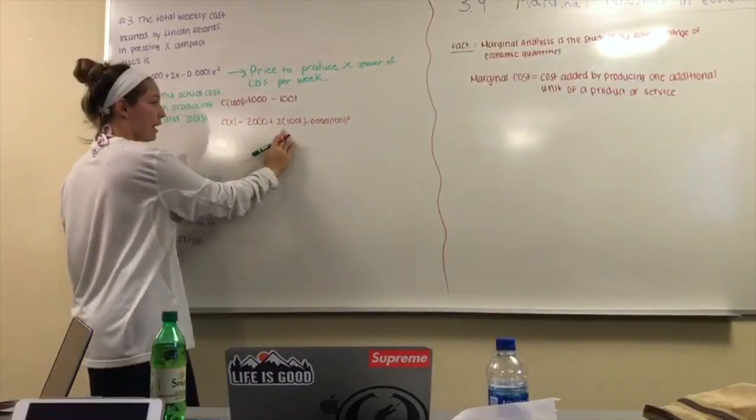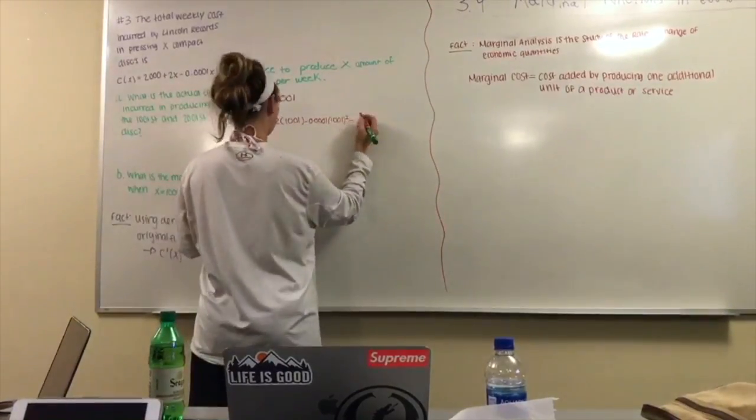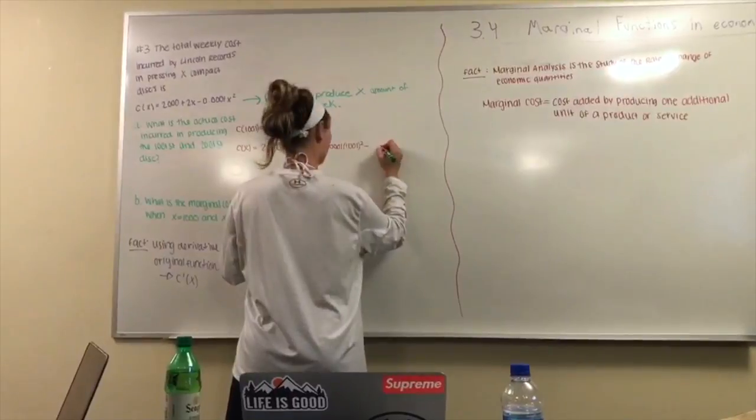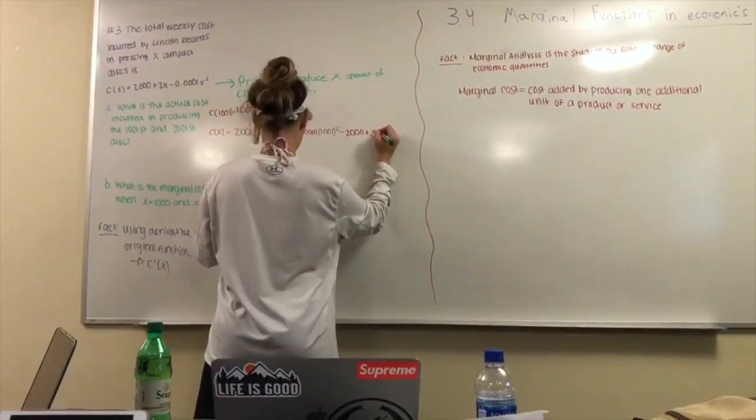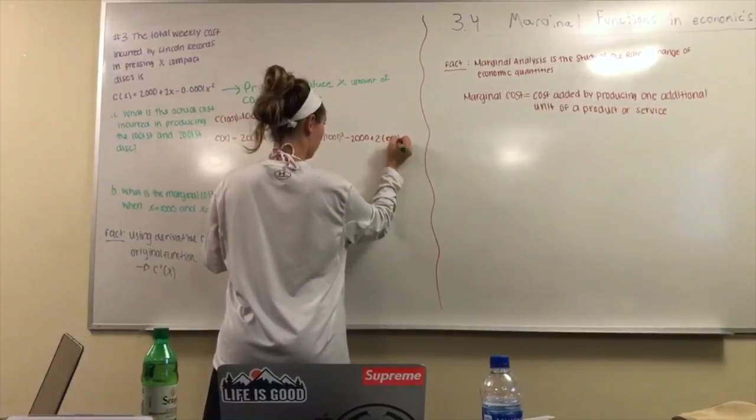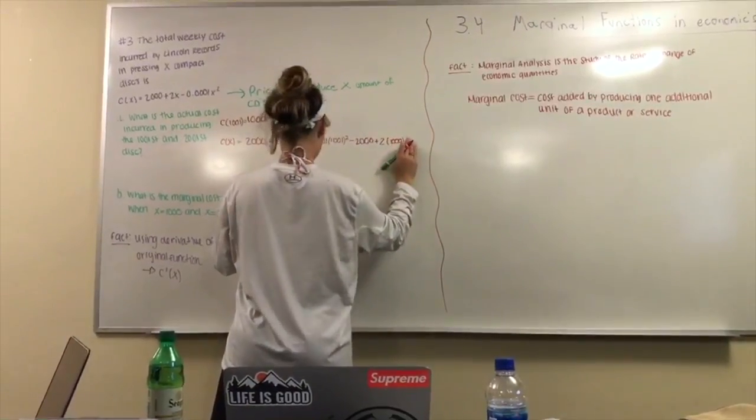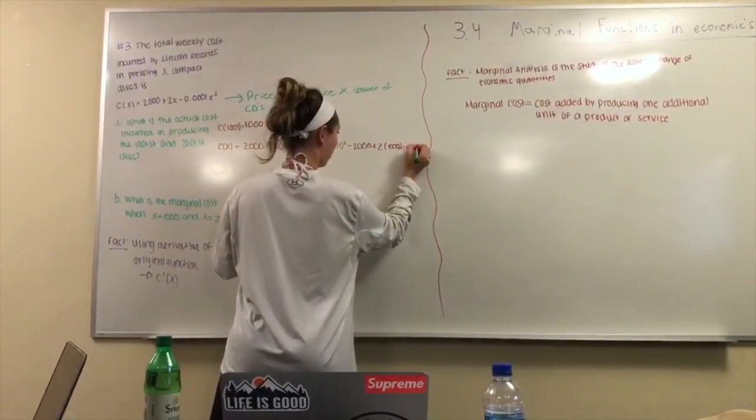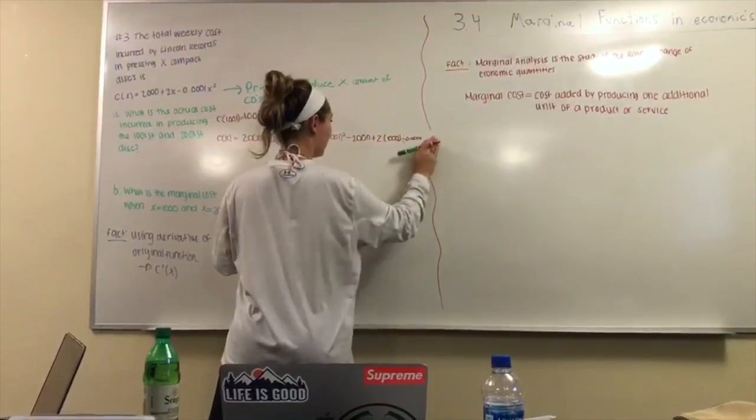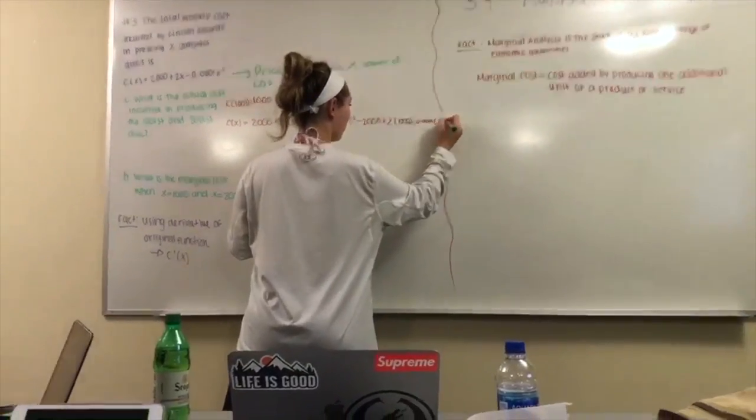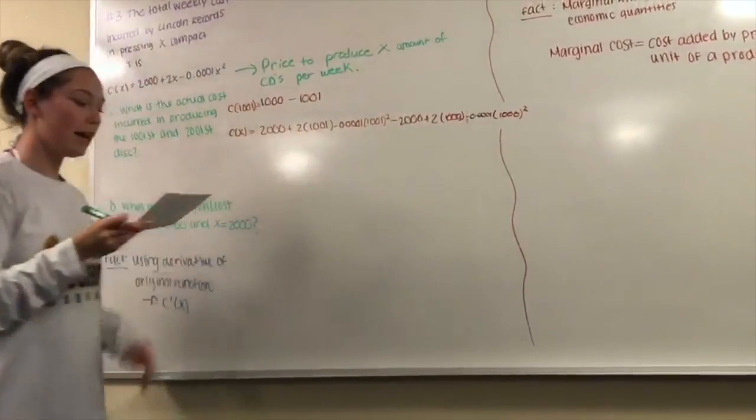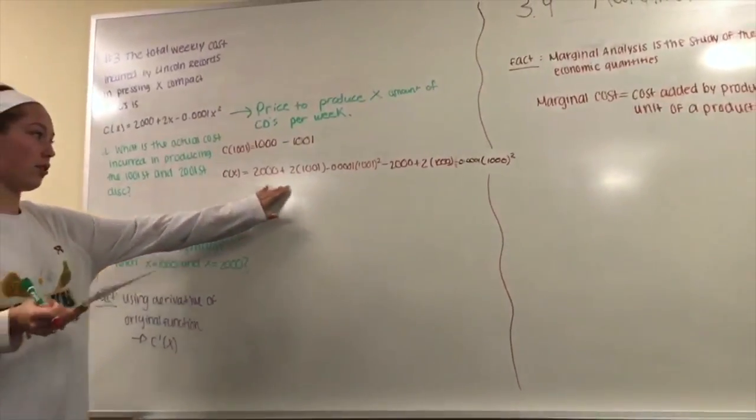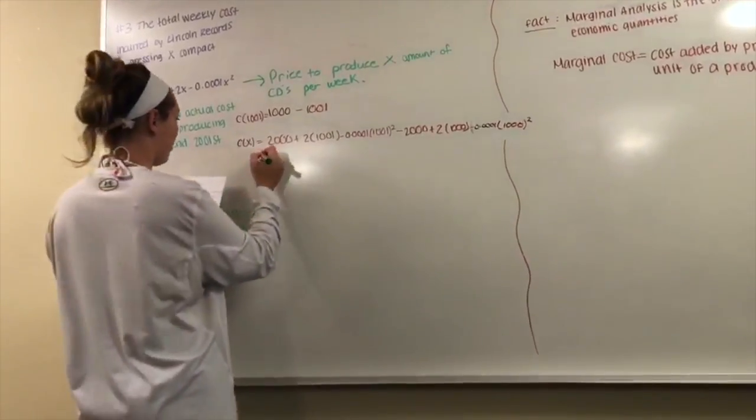So now that we have that written out, we're going to subtract by the 1,000 with the same equation. Okay, so once we have that right now you basically just do order of operations till you get down to the bottom.